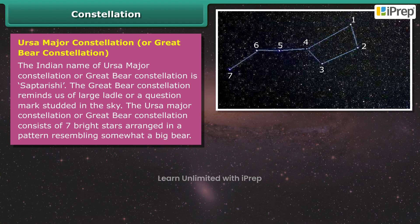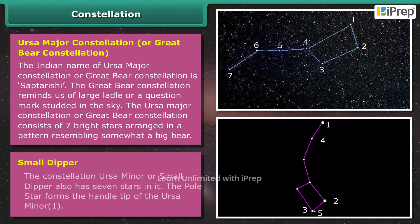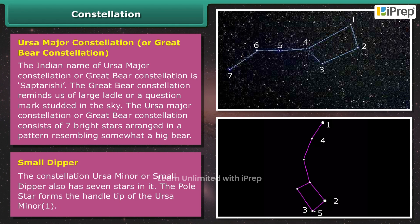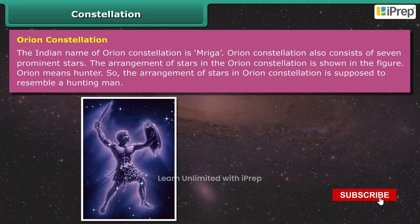The constellation Ursa Minor, or Small Dipper, also has seven stars in it. The Pole Star forms the handle tip of the Ursa Minor constellation.